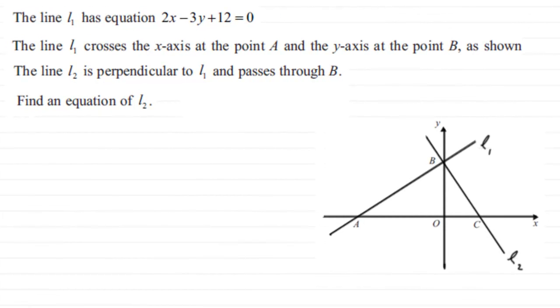Now for this question we've got the line L1 has the equation 2x minus 3y plus 12 equals 0, and we're told that the line L1 crosses the x-axis at a point A and the y-axis at a point B as shown. And the line L2 is perpendicular to L1 and passes through the point B, and we've got to find the equation then for the line L2.